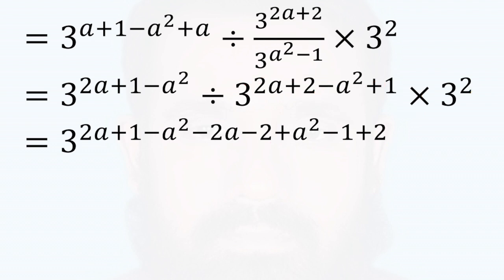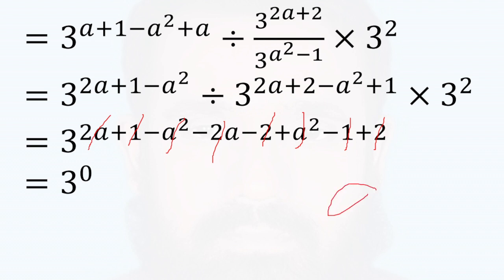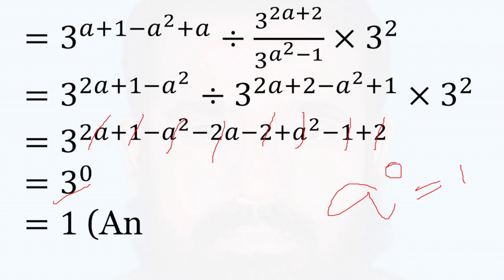A z e plus 2a minus 2a plus a squared minus a squared. Minus 1 plus 1 minus 2 plus 2a equals 0. A to the power 0 is 1. 3 to the power 0 is 1.